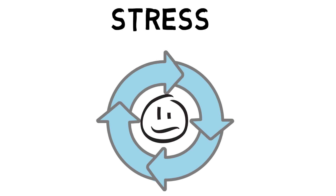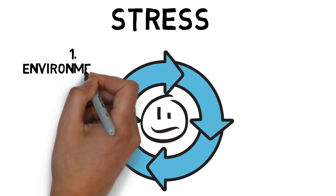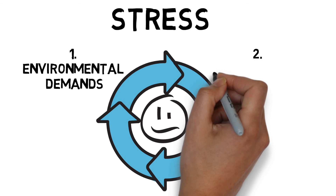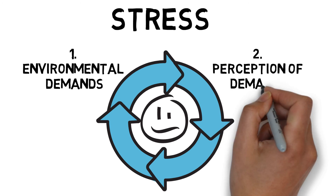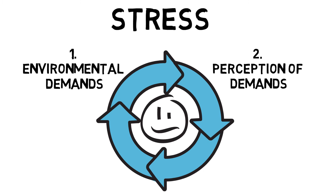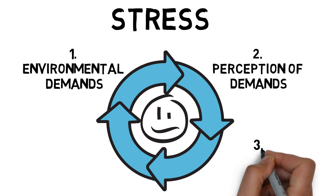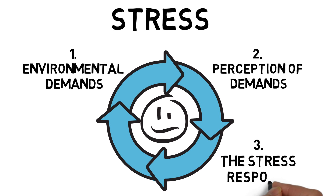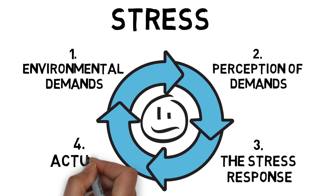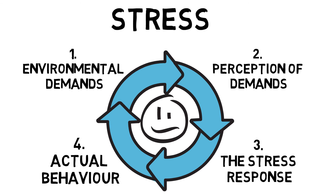The stress process involves environmental demands, which are dealing with the physical and psychological demands, such as performing a difficult skill in front of a large audience. Perception of demands involves the performer making a judgement about the specific requirements of the task and their ability to deal with them, such as feeling more anxious in a final for the first time. The stress response refers to the somatic and cognitive reactions to the judgement the performer has made. And the actual behaviour is the performer attempting to execute the skill — their behaviour will often reflect their attitudes towards the task, such as muscle tension during an important shot.